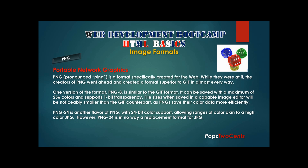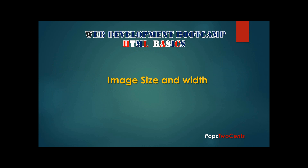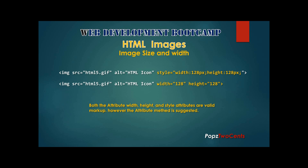The next format is Portable Network Graphics, or PNG (pronounced 'ping'). This format was specifically created for the web. PNG-8 is similar to GIF — it supports a maximum of 256 colors and one-bit transparency, but file sizes are noticeably smaller because PNG saves color data more efficiently. PNG-24 is another flavor with 24-bit color, allowing color ranges similar to a high-quality JPEG; however, PNG-24 is not a replacement format for JPEG.